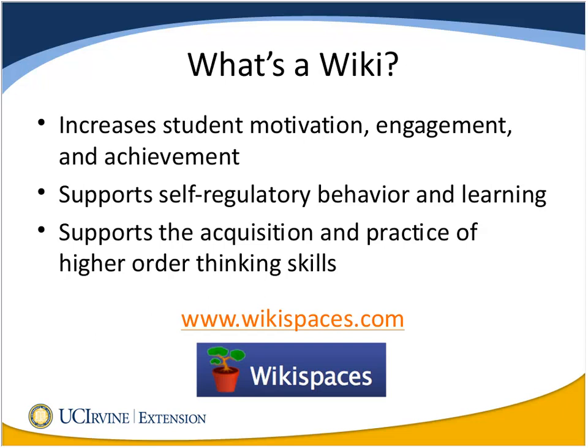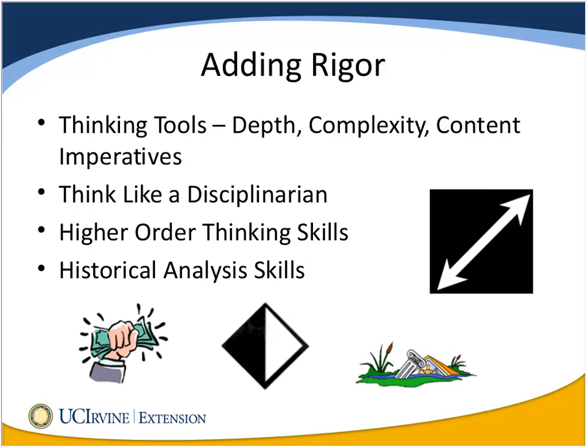For my classes, I have chosen to use Wikispaces because it is easy to set up and educators get a free premium account that is free of advertisements. But there are other wiki platforms, such as PB Wikis or PB Works. To add rigor to wiki assignments, I integrate several different elements: thinking tools, Think Like a Disciplinarian, higher-order thinking skills, and historical analysis skills. On the wiki, students have the option to use Sandra Kaplan's thinking tools to demonstrate their understanding. Usually I give students a choice of which thinking tool to use, unless there is a particular skill they need to demonstrate or practice.